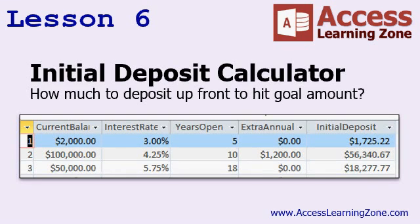The initial deposit calculator is good for planning for a future expense, like saving for a wedding or college funds. Let's say you want to have $50,000 for the kids' college fund. You have an investment vehicle at 5.75%, and you need that money in 18 years. How much do you need to set aside right now? Access tells me it's about $18,000. That's how much you need to invest now to have a target amount in the future.